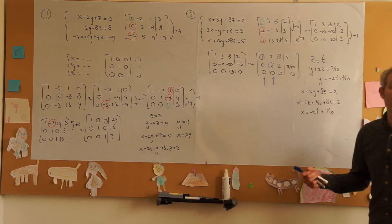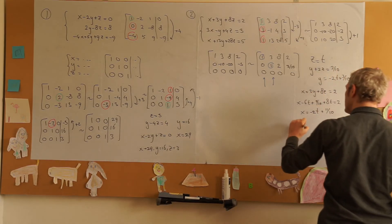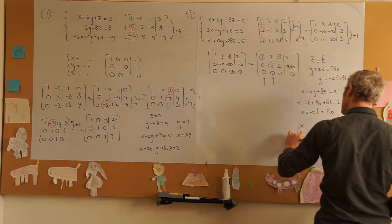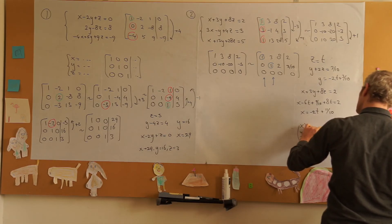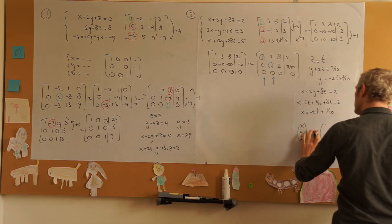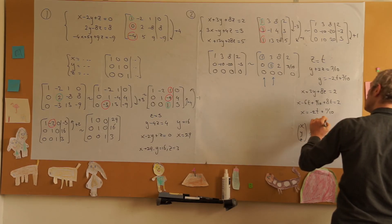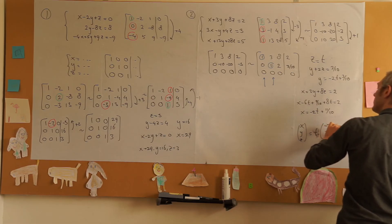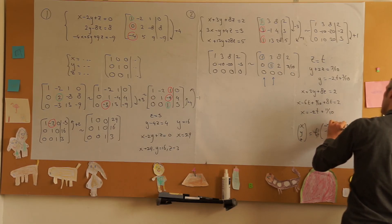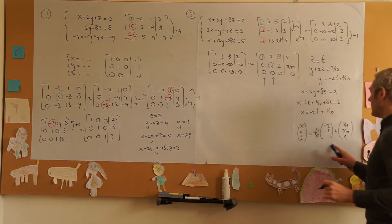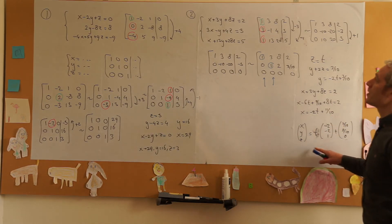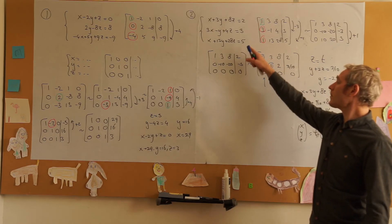And here we have our solution set and we see that if we were to write these things together x, y, z we have t times (-2, -2, 1) plus (11 over 10, 3 over 10, 0) and we see that we have a line in 3D space.